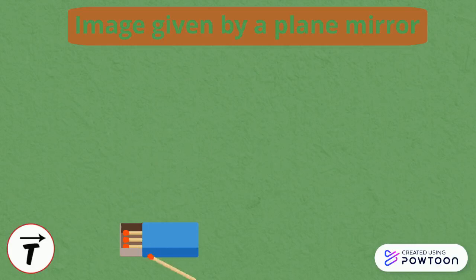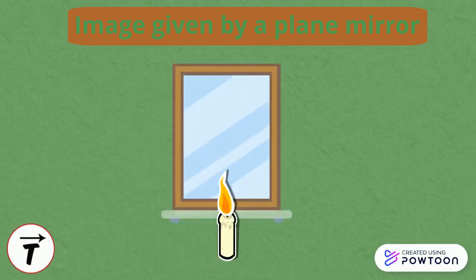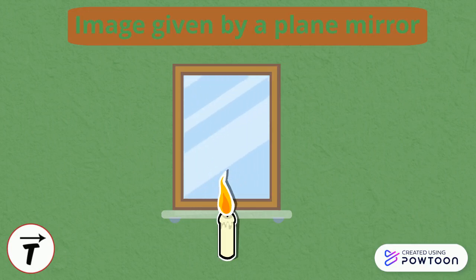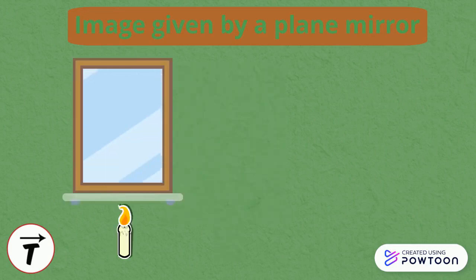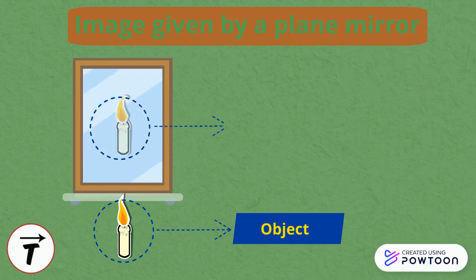Consider a candle flame placed in front of a plane mirror. Rays of light are reflected from the mirror surface in all directions. The number of rays is infinite and every one obeys the law of reflection. Due to the phenomenon of reflection, you will see an image of the candle flame behind the mirror.